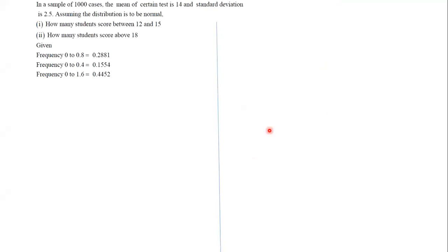In normal distribution, we will discuss with the help of examples. So first, let's see this example. In a sample of 1000 cases, the mean of a certain test is 14 and the standard deviation is 2.5. The mean and standard deviation is given to us. Assuming the distribution is to be normal, how many students score between 12 and 15?